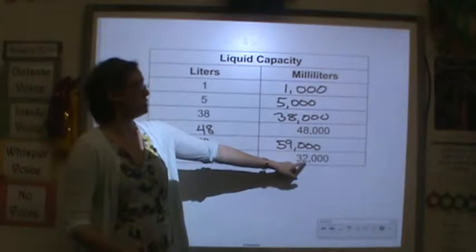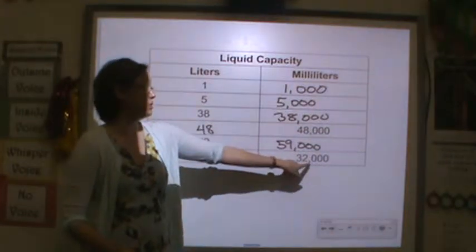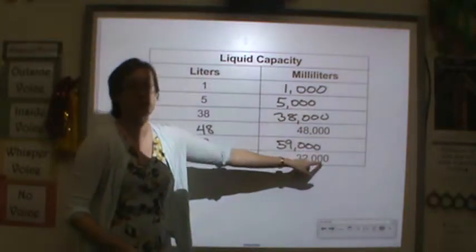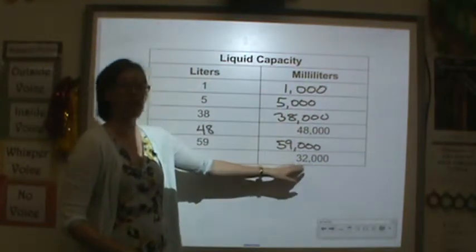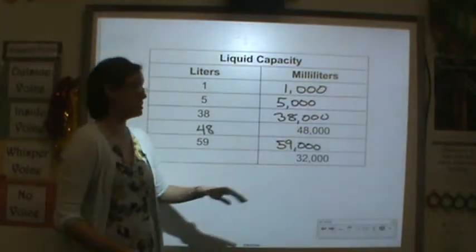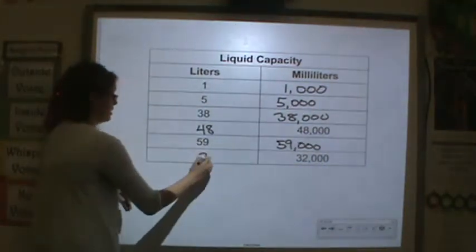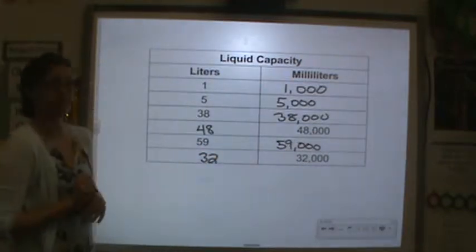And thirty-two thousand milliliters — how many groups of a thousand do you have? You have thirty-two, so that's thirty-two liters.